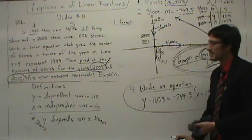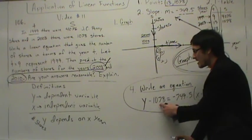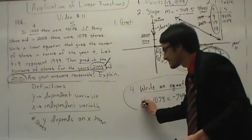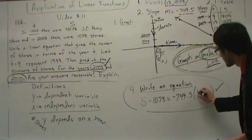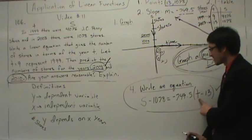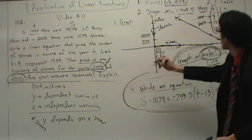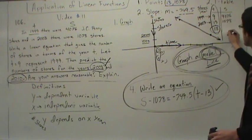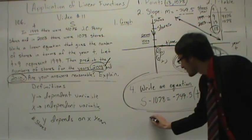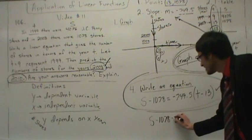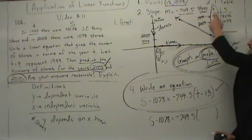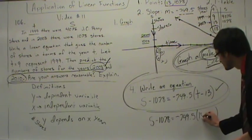I made a big mistake in the equation — it's not Y minus but S, and not X minus but T. So the equation should read: S minus 1,078 equals negative 749.5 times the quantity (T minus 13). To use this to make our prediction, we're going to put 18 in for T and find S. We know T — we don't know S. Putting 18 in for T: S minus 1,078 equals negative 749.5 times (18 minus 13).